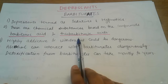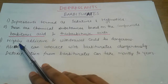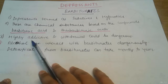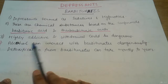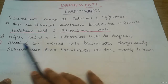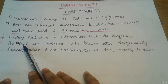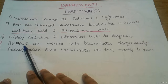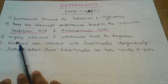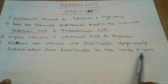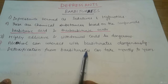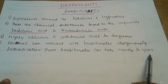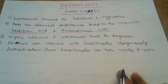Barbituric acid and thiobarbituric acid are the two chemical compounds present in barbiturates. Barbiturates are highly addictive and withdrawal can be dangerous — even fatal. Alcohol is the most interactive substance with barbiturates, so one should never take alcohol with barbiturates as they interact dangerously. Detoxification from barbiturates can take months to years, and addicts are not usually able to recover easily.